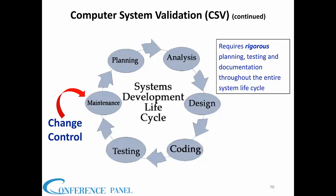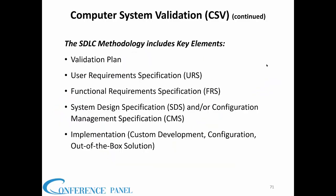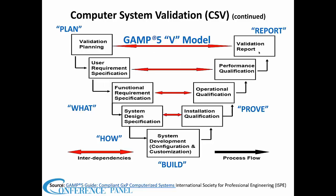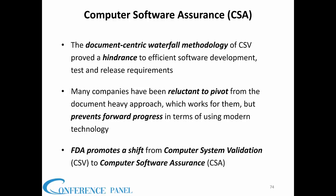Once a system is in maintenance or production mode, you have to lock it down. When validated, you have a validation plan with high-level user requirements in business terminology. The GAM5V model illustrates computer software assurance visually. The document-centric waterfall approach of traditional CSV (computer system validation) is a hindrance to efficient software development, testing, and release.